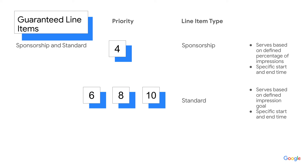Standard line items are the next priority. These items serve based on a defined impression goal, as well as a start and end time. This line item should be used for direct sold campaigns where your buyer wants a specific number of impressions to serve.